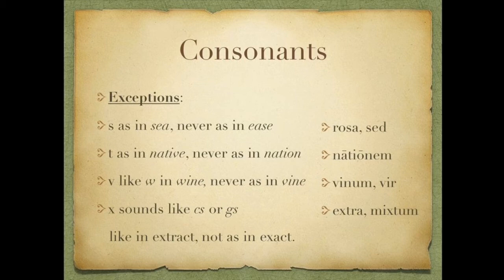The other tricky one: V is pronounced like a W. They don't have a W in Latin, but they do have the W sound — V is like the W in wine, never as in vine. So we would say vinum and vir. X sounds like CS or GS — like in extract, not exact — so we would say extra and mixtum.